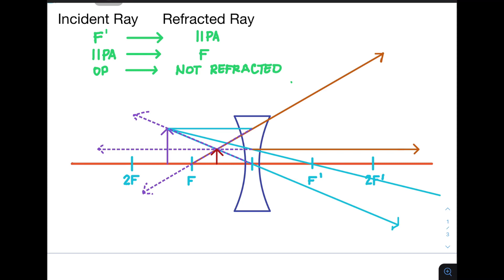Now notice that the image formed is smaller than the original object, and it is still located at the top or above the principal axis, and it is formed by intersecting virtual rays.